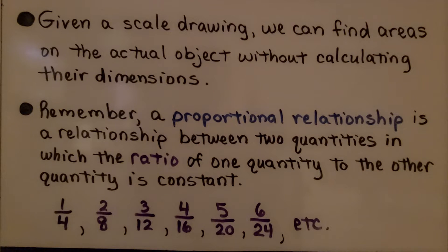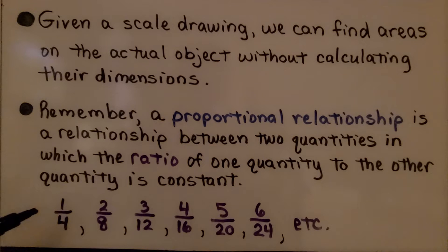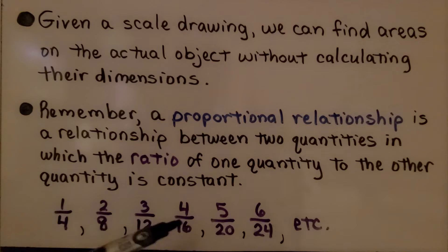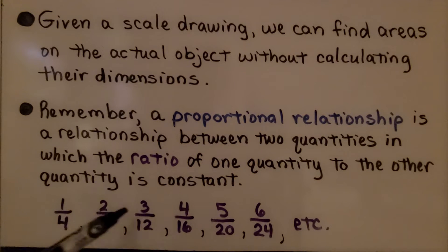Remember, a proportional relationship is a relationship between two quantities in which the ratio of one quantity to the other quantity is constant. Here we have proportional relationships: one-fourth, two-eighths, and three-twelfths. These are all really one-fourth if we were to simplify them.